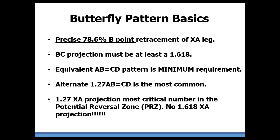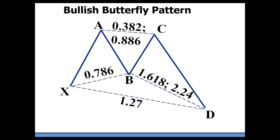We look at the 1.27 XA projection — that's the most critical number in the potential reversal zone. It's the only XA projection. We don't use a 1.618 in the Butterfly, just the 1.27.